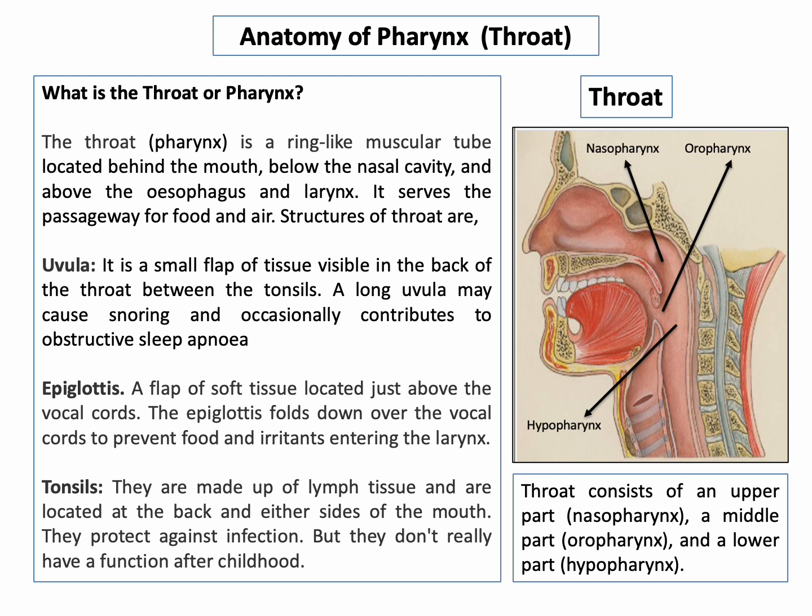Regarding the anatomy of the pharynx, the throat or pharynx is a ring-like muscular tube located behind the mouth, below the nasal cavity, and above the esophagus and larynx. It serves as a passageway for food and air.